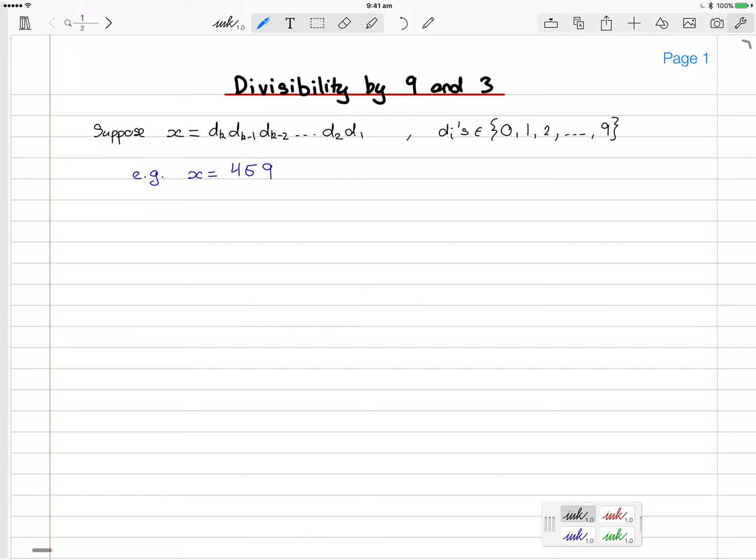Okay now since we're in base 10, our number x, our integer x, can actually be written as the following. Well if you have a look this is like the units or the ones column of our number, this is the 10 column, this is if there was a number here that would be the hundreds and then the thousandth and then so on. So really our x is equal to d1 times 1, but 1 is really just 10 to the power 0 here, that's what it means.